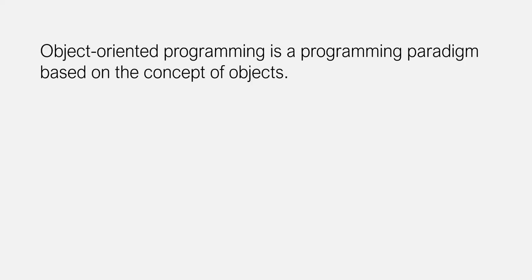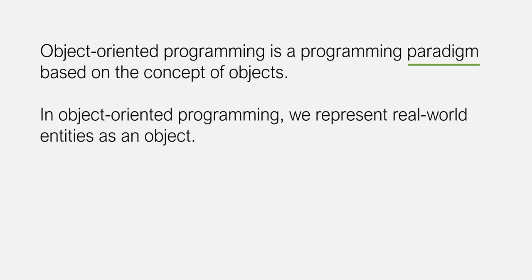What is object-oriented programming? Object-oriented programming is a programming paradigm based on the concept of objects. Paradigm simply means how we write and organize code in a program. In object-oriented programming, we represent real-world entities as an object.